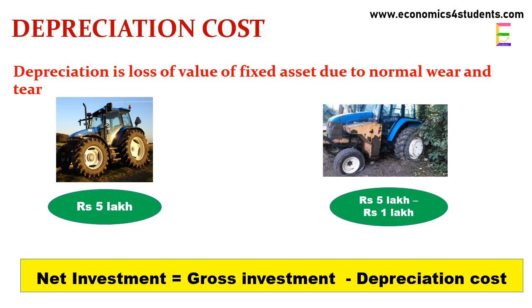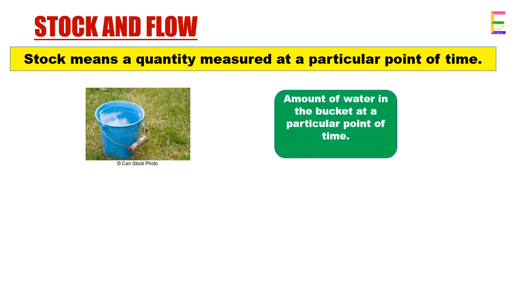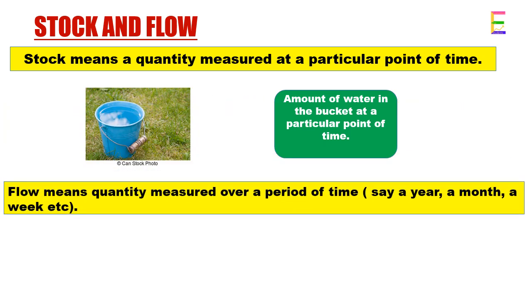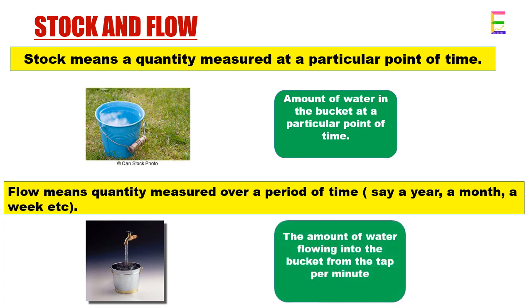The next very important concepts are stock and flow. Stock means quantity measured at a particular point of time. For example, the amount of water in a bucket at a particular point of time. Flow means quantity measured over a period of time, say a year, a month, a week, etc. The amount of water flowing into the bucket from the tap per minute is a flow concept.